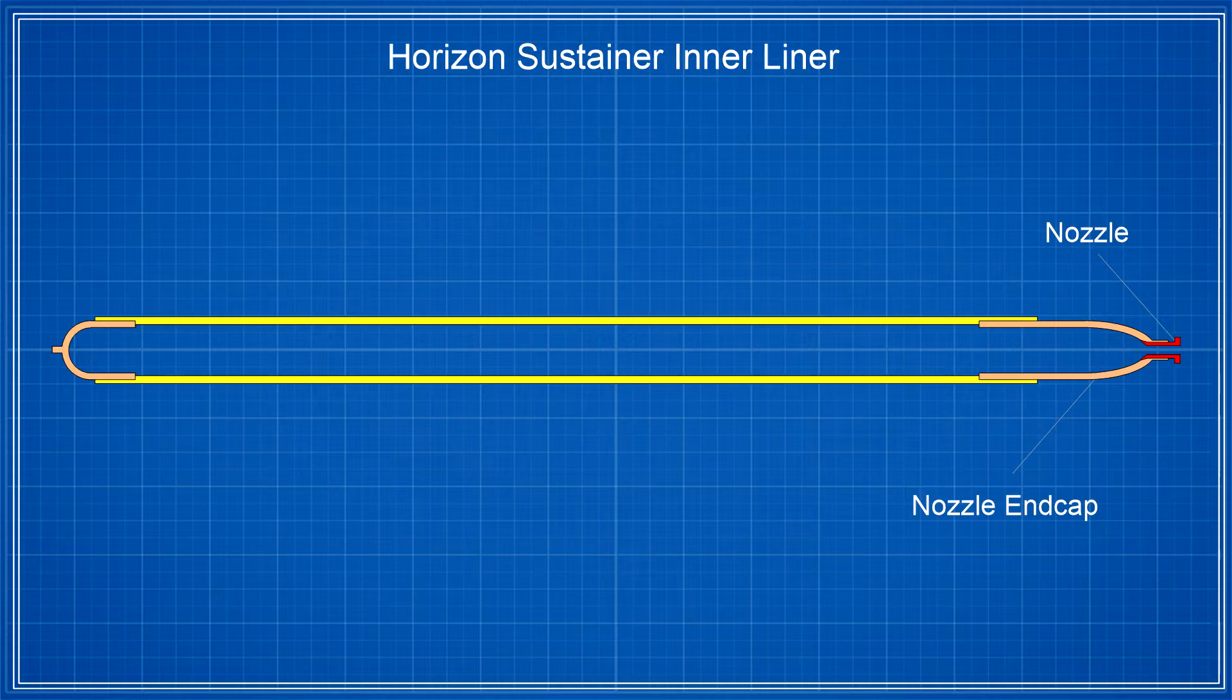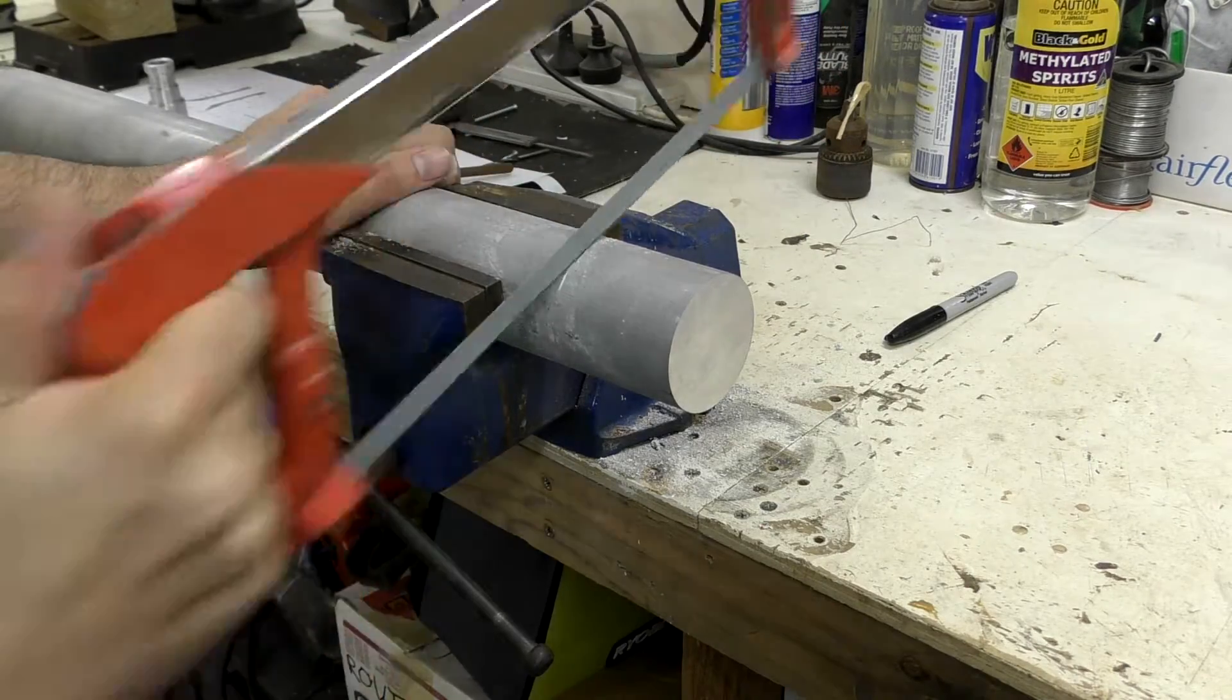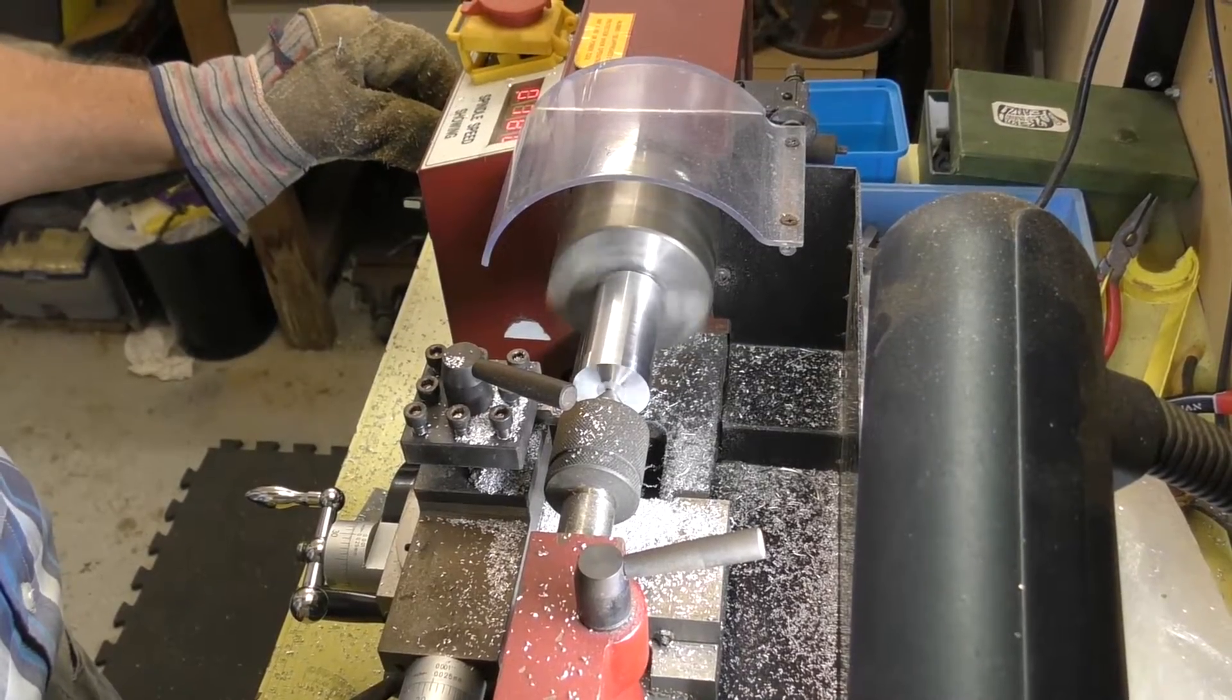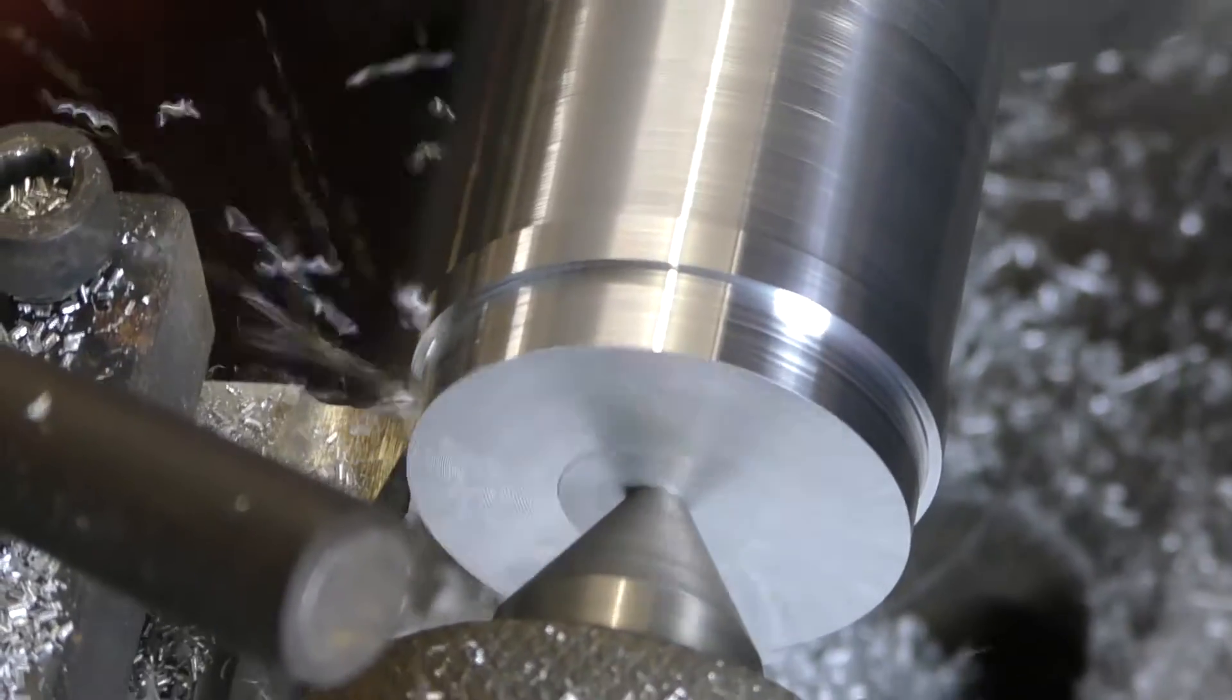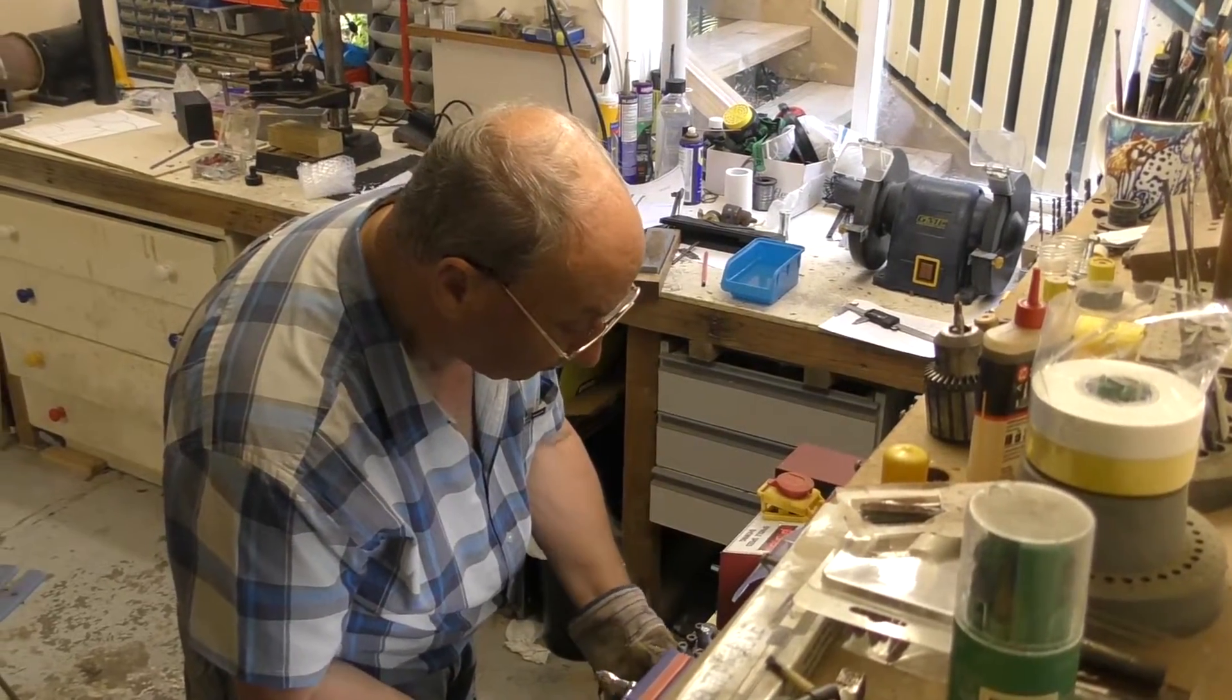Next we make the nozzle and nozzle end cap. The nozzle is just made from some aluminum stock. This took around 20 minutes to cut off by hand. The nozzle is machined from a single piece of aluminum and is designed to be embedded in the end cap, unlike the Dark Shadow nozzle which was removable.